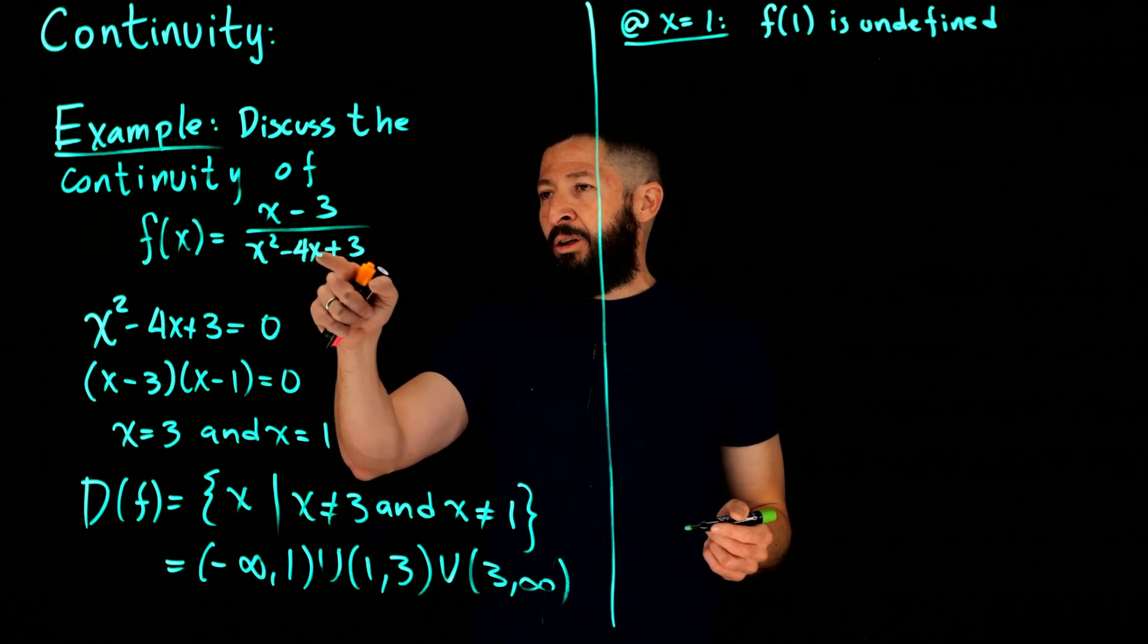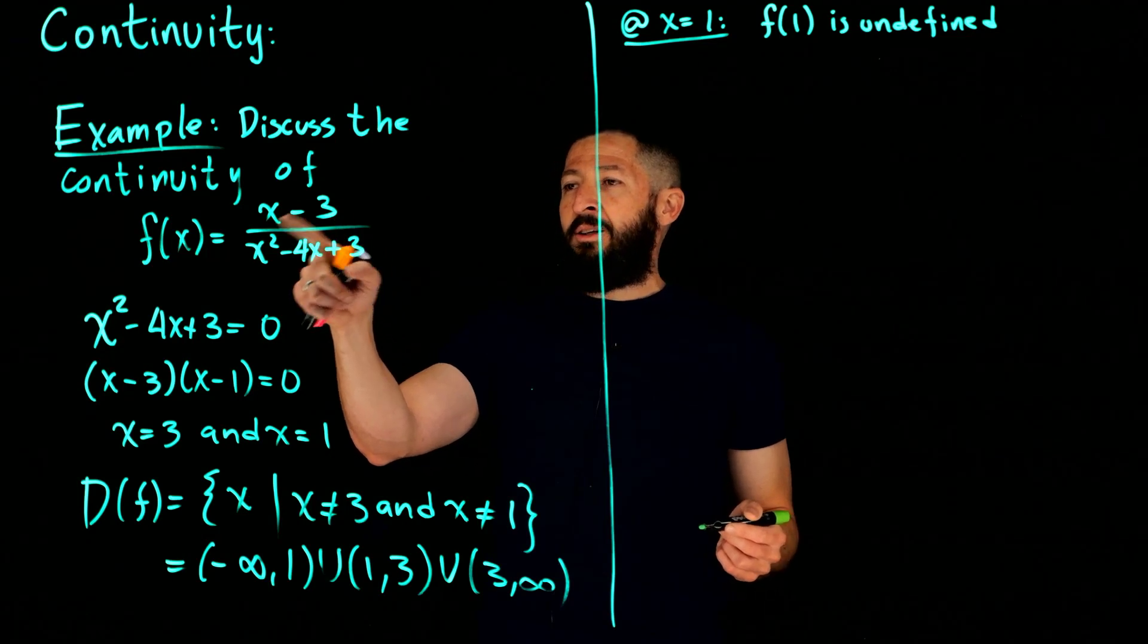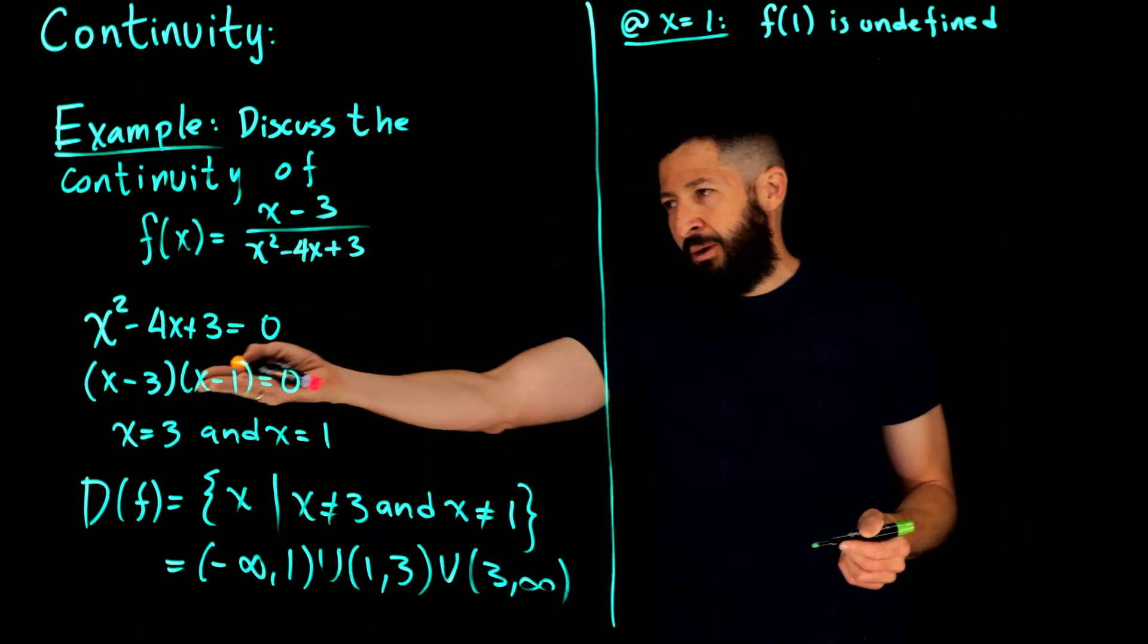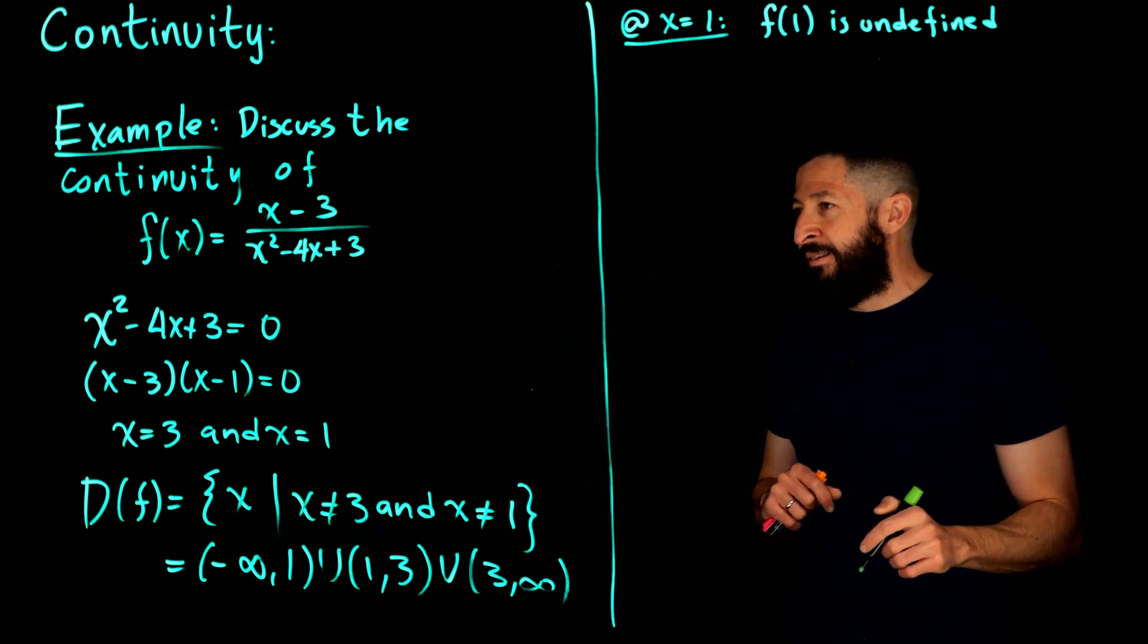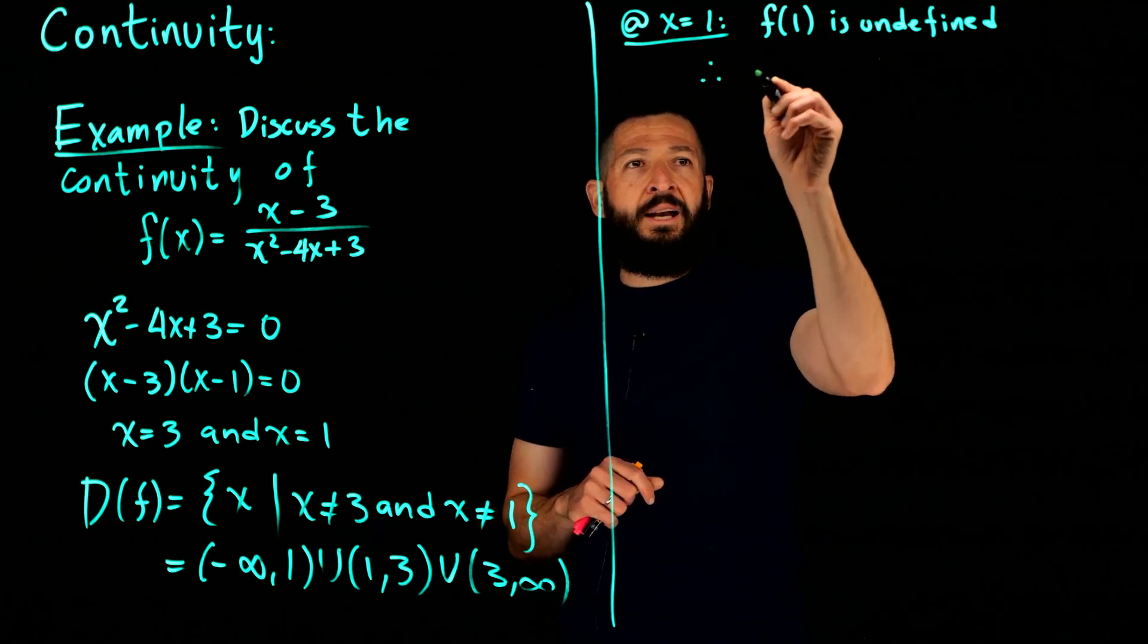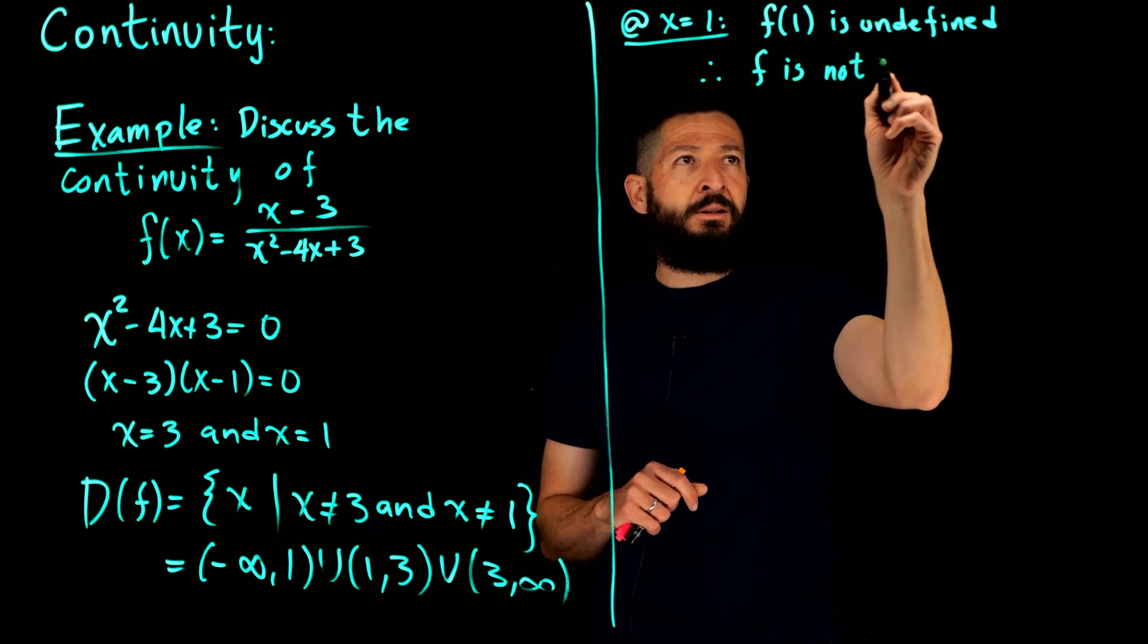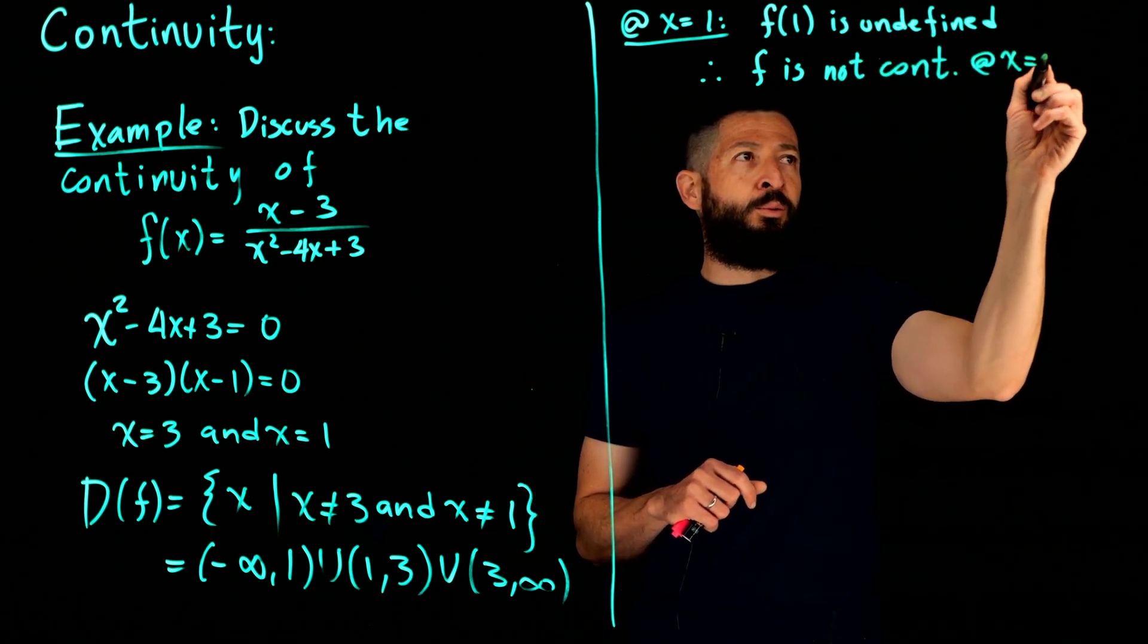But then you get 1 squared, which is 1, minus 4 times 1, so minus 4. You get negative 3 from this one, and plus 3 is 0, 0 in the denominator. We solve for that. That's how we determine that. So f of 1 is undefined. Well, that already tells us that f is not continuous at x equals to 1.